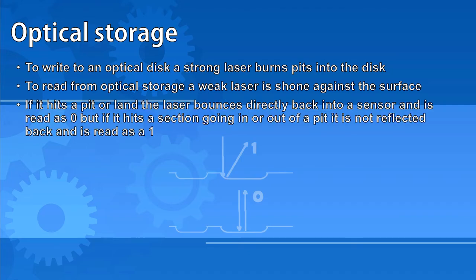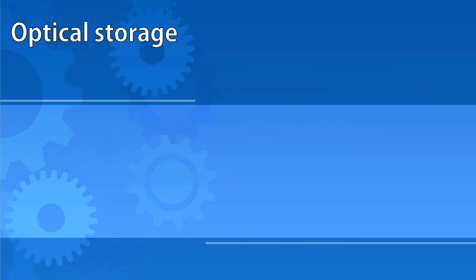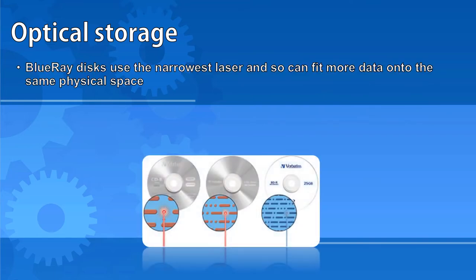If the laser hits a pit or a land — which is a section that has not been burned — it bounces directly back into a sensor and is read as a zero. But if it hits a section going into or out of a pit, it's not reflected back and is read as a one. Blu-ray discs use the narrowest and most accurate laser, so they're able to fit a tighter and more detailed spiral from the centre to the outside.